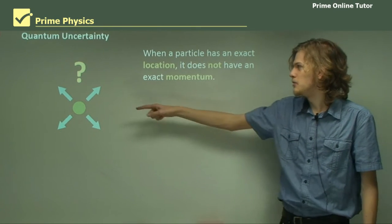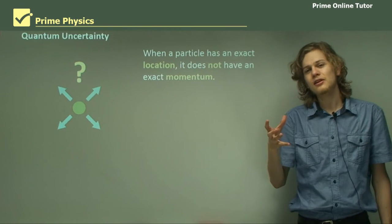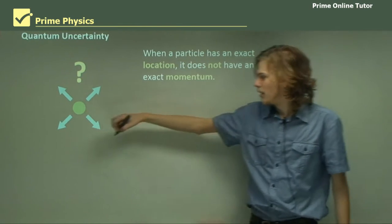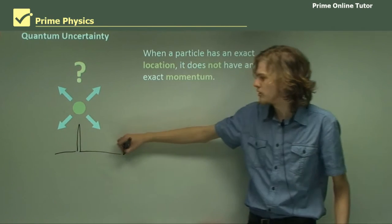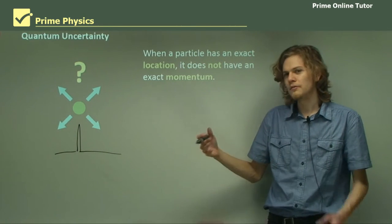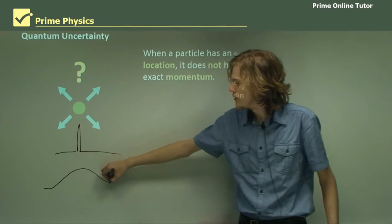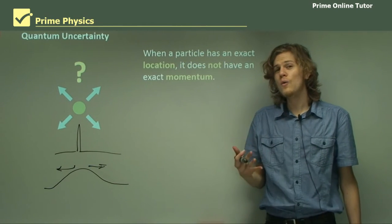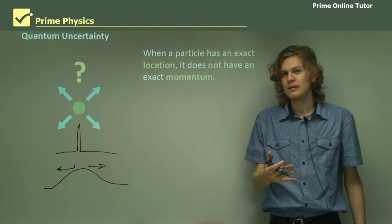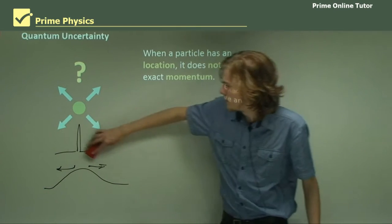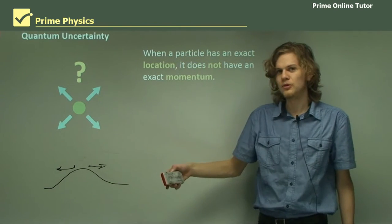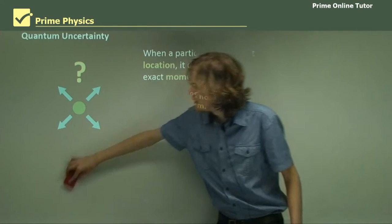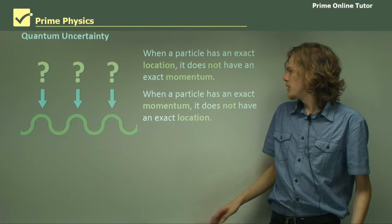When a particle has an exact location and we know where it is, it doesn't have a clearly defined speed. If we look at Schrödinger's wave equation, the particle starts out in the middle, but after that it'll sort of spread out. The particle could have gone that way or that way, and there is no way of telling which without measuring it again. But that would bring up its own problems — when we measure it, we can either find the position, which means we can't figure out how fast it's going, or we can figure out how fast it's going, but not its position.